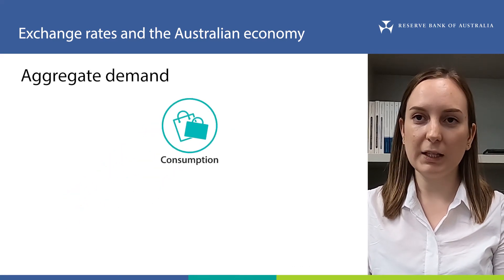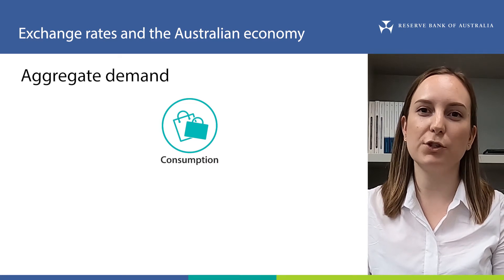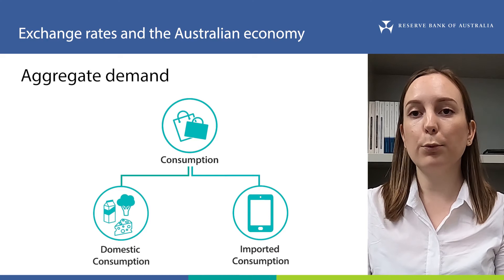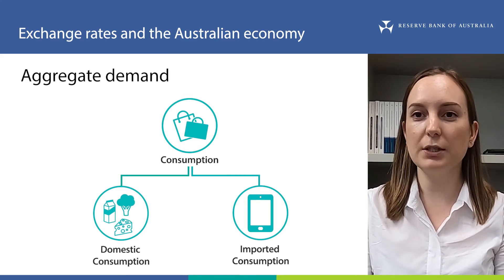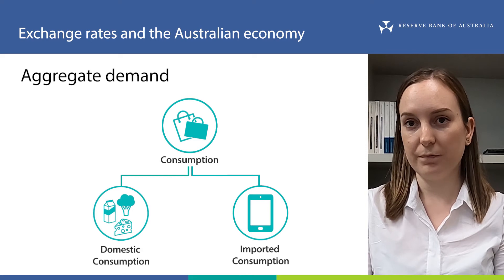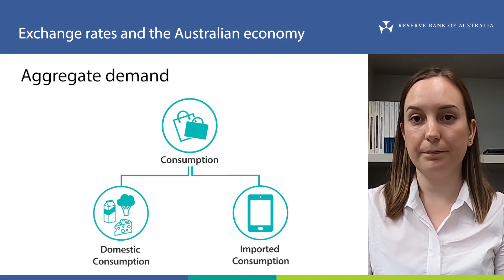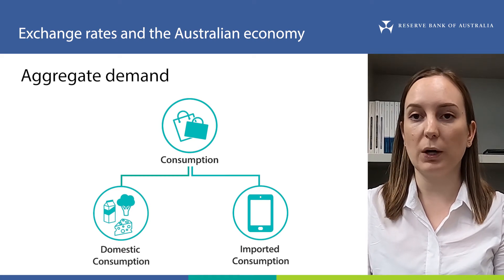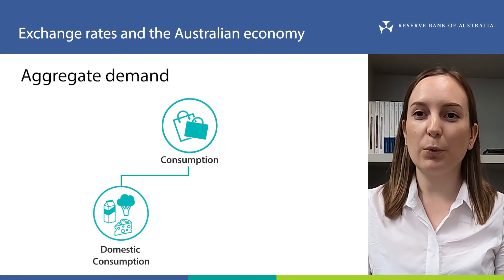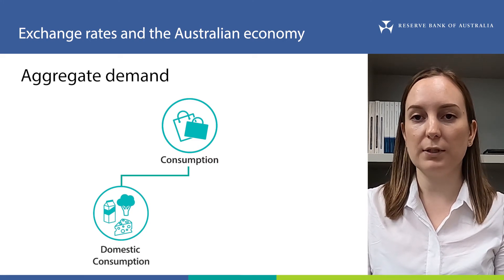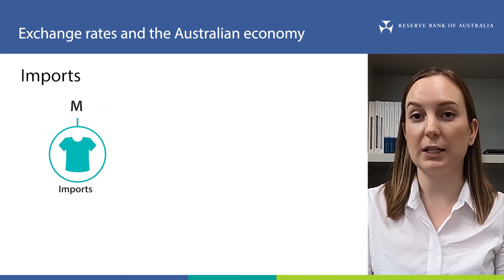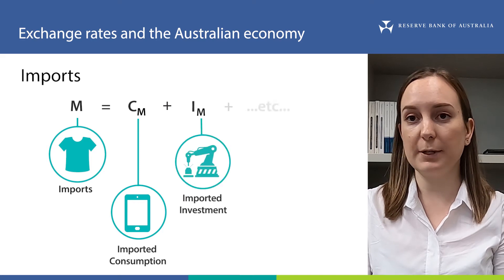Let's talk more about consumption. Think about your consumption — all the goods and services that you buy. Some of these are Australian, like most fresh food, but some, like your mobile phone, are imported from overseas. Consumption in our aggregate demand equation includes both domestic consumption and imported consumption, and it works the same way for the other parts of aggregate demand. When we subtract imports from the aggregate demand equation, we are subtracting all the spending on imports contained in all the other parts of demand, so that aggregate demand only captures spending on Australian goods and services. It can be helpful to break imports down similarly — for example, imported consumption, imported investment, and so on.